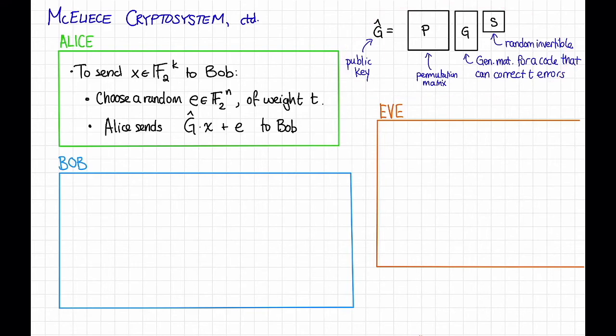Okay, so that's what Alice does. How does Bob decrypt this message? So first, Bob is going to compute P inverse times the message he receives. Since G hat is equal to P times G times S, this is equal to G times S times X plus P inverse times E.